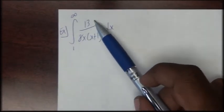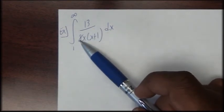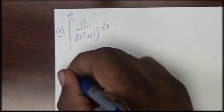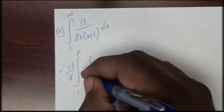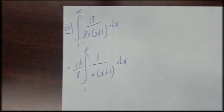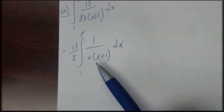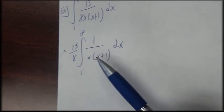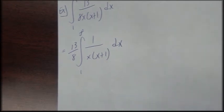The first thing I'll do is take our coefficient 13 eighths and pull that in front of the integral operator. Next, I'll use partial fractions and rewrite 1 over x times the quantity (x plus 1) as a sum and difference of terms.